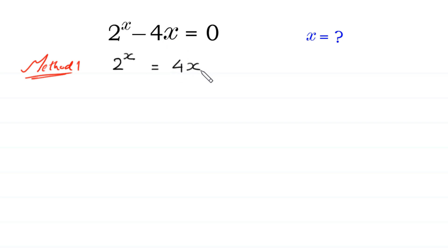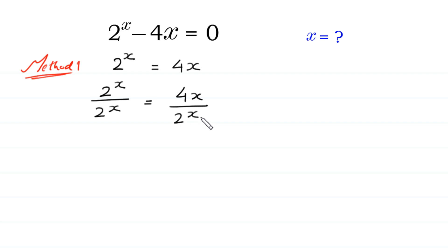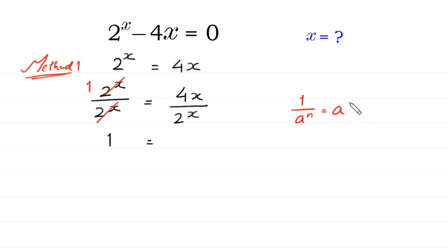Now we divide both sides of this equation by 2 to the power x. 2 to the power x divided by 2 to the power x equals 4x divided by 2 to the power x. The 2^x cancels, leaving 1. So 1 equals 4x over 2^x. According to the property of exponents, 1 over a^n equals a^(negative n), so we write 4x times 2 to the power negative x.